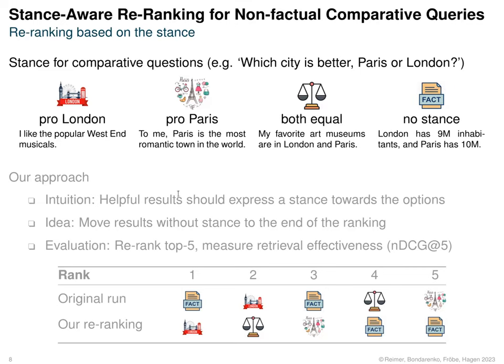For example, we could say: "I like the West End musicals in London, therefore I'm in favor of London." I might find Paris very romantic, so I favor Paris. Both could be fine because both have great art museums. And then we have facts, like London has 9 million inhabitants and Paris has some 1 million more — but that doesn't give a stance. It depends on the reader to decide whether this could mean something pro Paris or pro London.